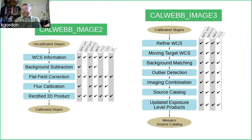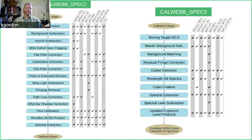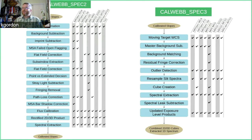One important thing we've learned from previous missions: we should include moving targets as part of the pipeline from the beginning, so all moving target science in the solar system is supported just like everything else — making mosaics of moving targets, extracting spectra, everything like that. Spectroscopy is a bit more complex with more steps and more specificity between instrument modes, in both spec2 for individual exposures and spec3 where we start combining things into multi-exposure IFU cubes or co-adding split spectra to get the best signal-to-noise detections.